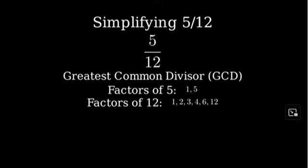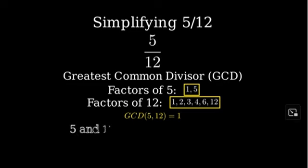Looking at both lists, we can see that the only number that appears in both lists is 1. This means that 1 is the greatest common divisor of 5 and 12. When the greatest common divisor of two numbers is 1, we say they are coprime or relatively prime numbers. This means that 5 twelfths cannot be simplified further.